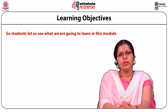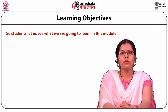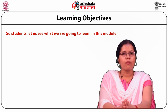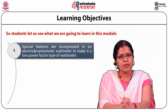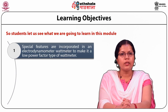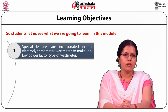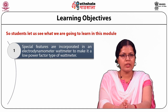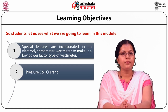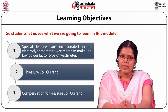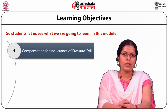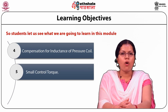From this module, students will get to know about the following topics. First, Low Power Factor Type Wattmeters — we will see that special features need to be incorporated in an Electrodynamometer Wattmeter to make it a Low Power Factor Type Wattmeter, such as Pressure Coil Current, Compensation of Pressure Coil Current, Compensation for Inductance of Pressure Coil, and Small Control Torque.